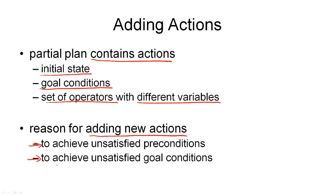One important distinction to the type of planning we've done previously is that we can add an action anywhere in the plan. In forward search, we've always added an action to the end of the plan we're currently building up. And in backward search, we've added it to the beginning. Here, we have no such restriction. We can add new actions anywhere in the plan.